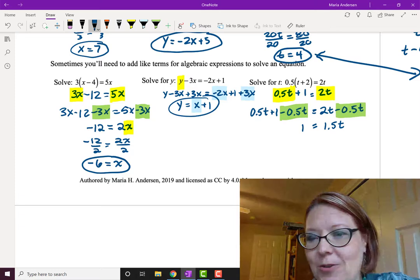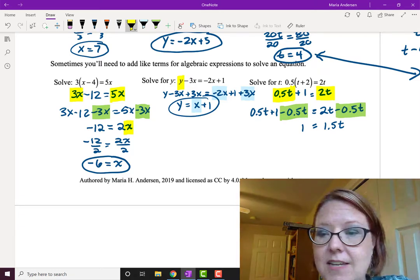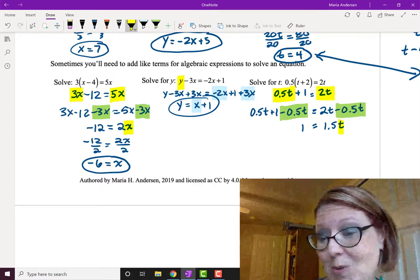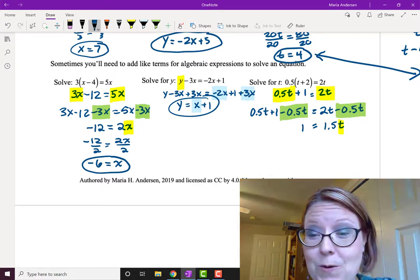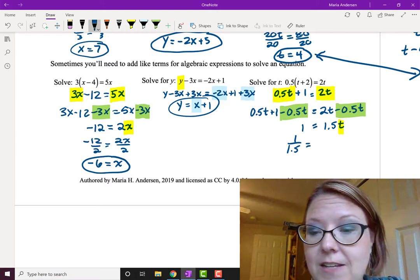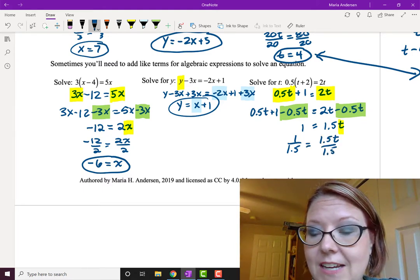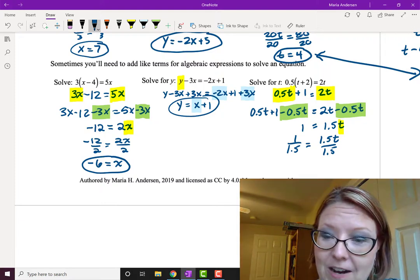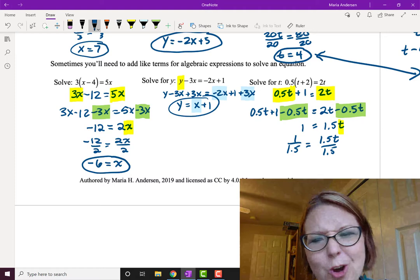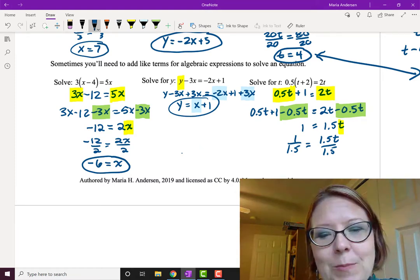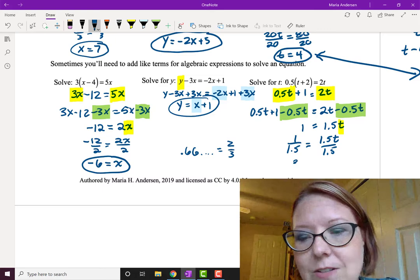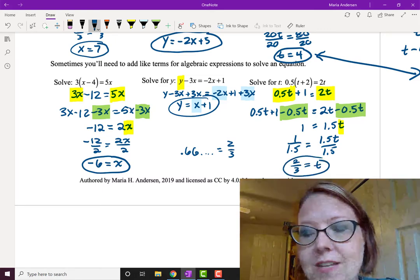Okay, so finally the last thing we need to do, we've got 1.5t on the right. We want to isolate the t, so we've got to divide by 1.5. Or if you want to use that other trick we did, you could just multiply both sides by 2, and that's going to work just fine as well. I'm going to divide both sides by 1.5. So I'm going to divide 1 by 1.5 on the left, and 1.5t divided by 1.5 on the right. That gives me 1 over 1.5, which is 0.6 repeating, 0.67 if you want to estimate it. But you should know that 0.6 repeating is really just the fraction two-thirds. So what we really have on the left-hand side there is two-thirds, and on the right-hand side t. So t equals two-thirds.